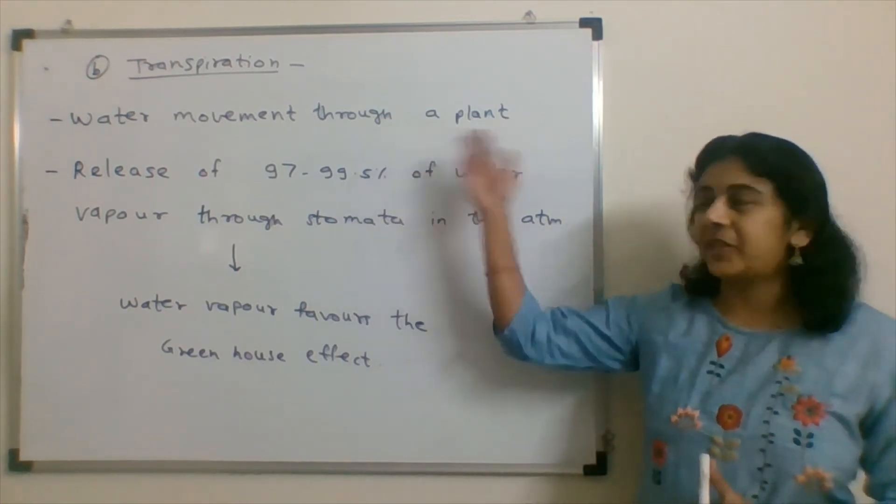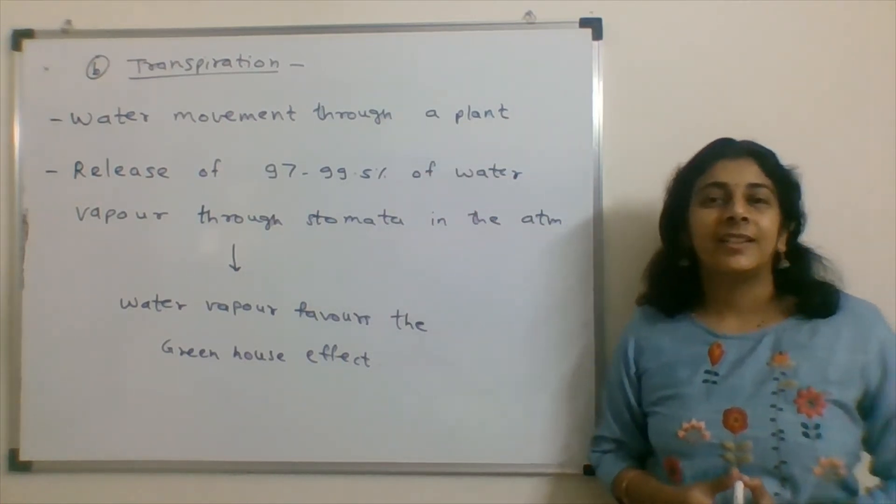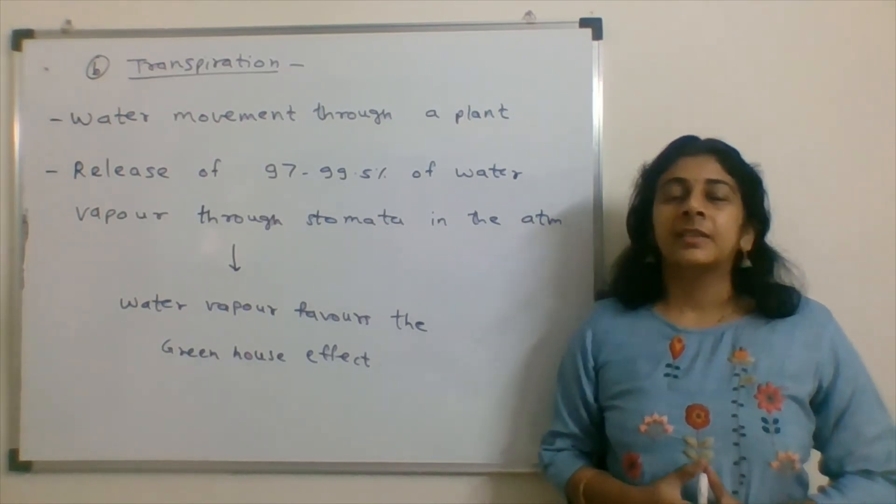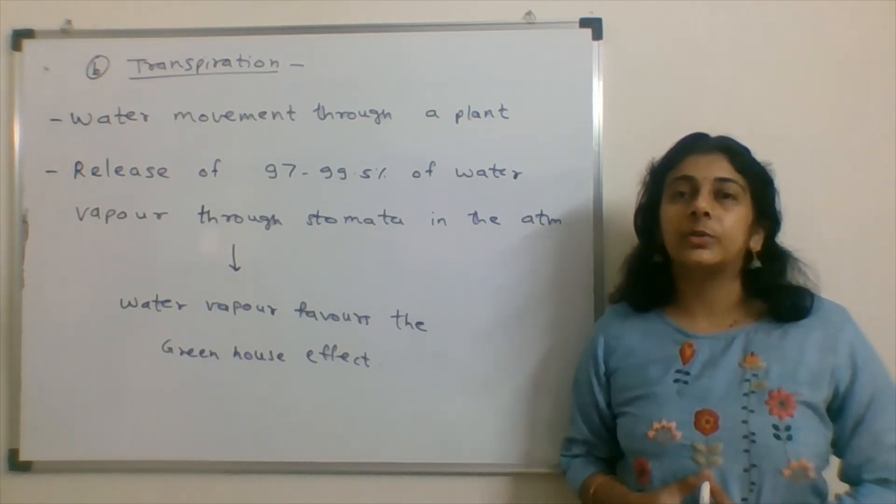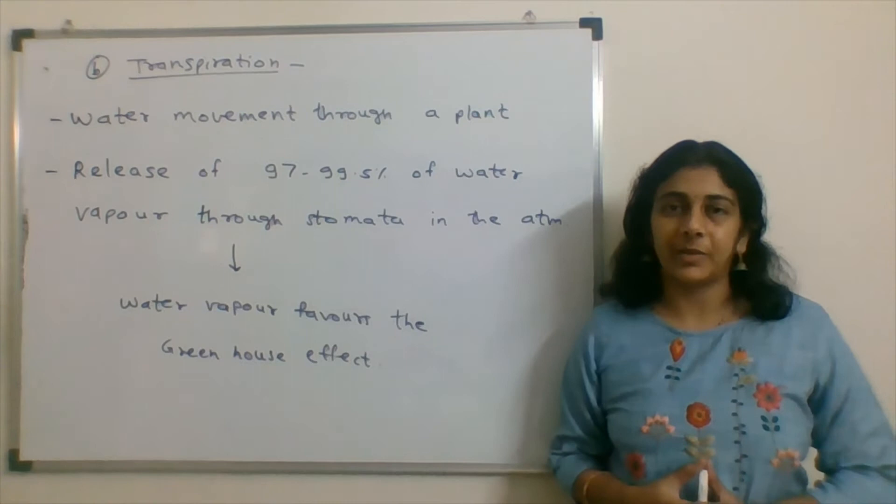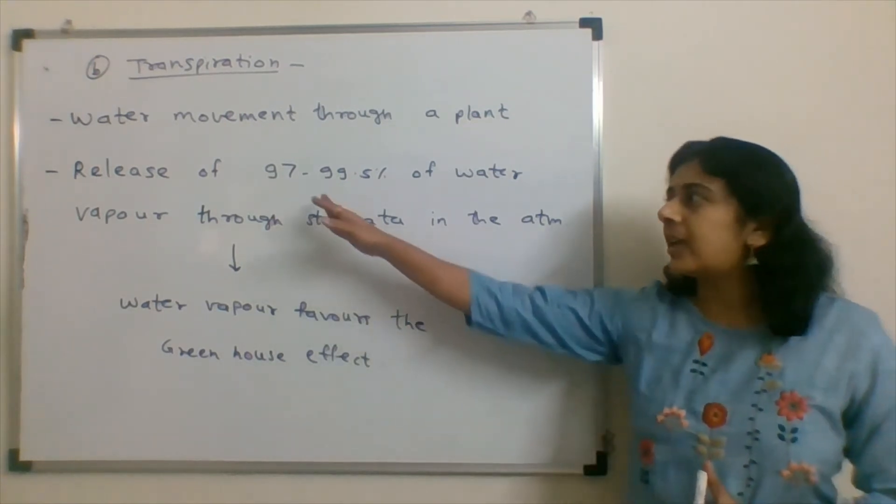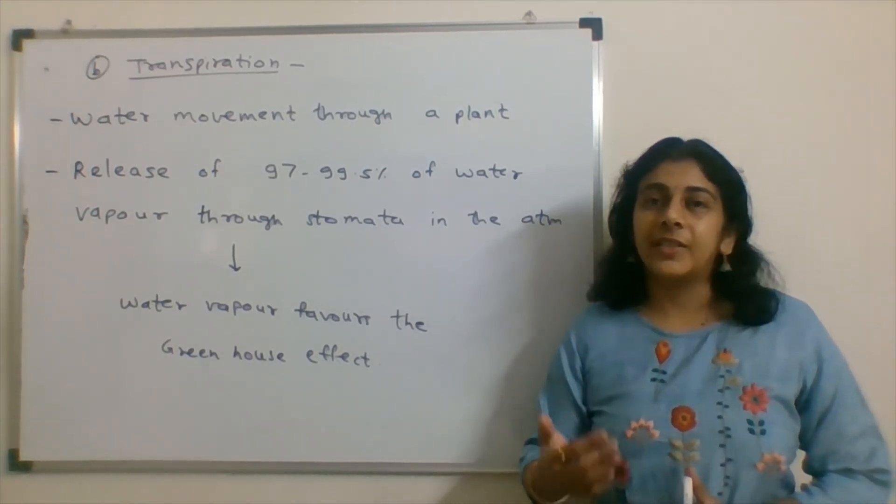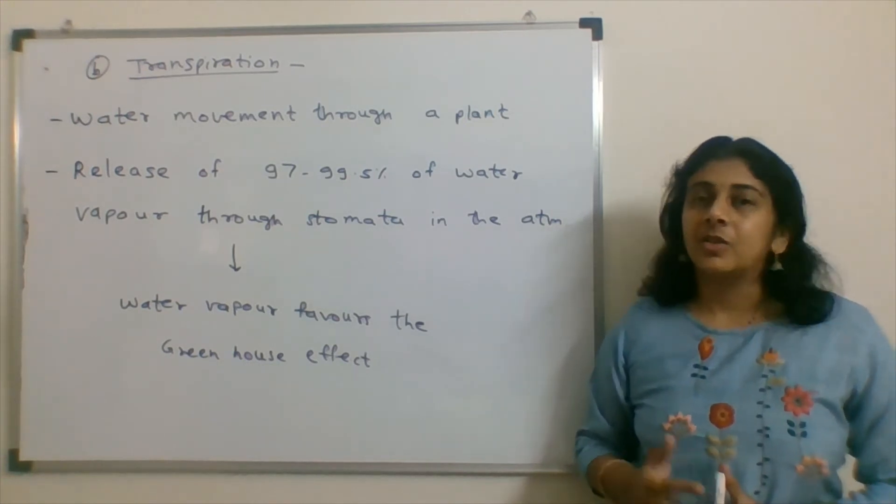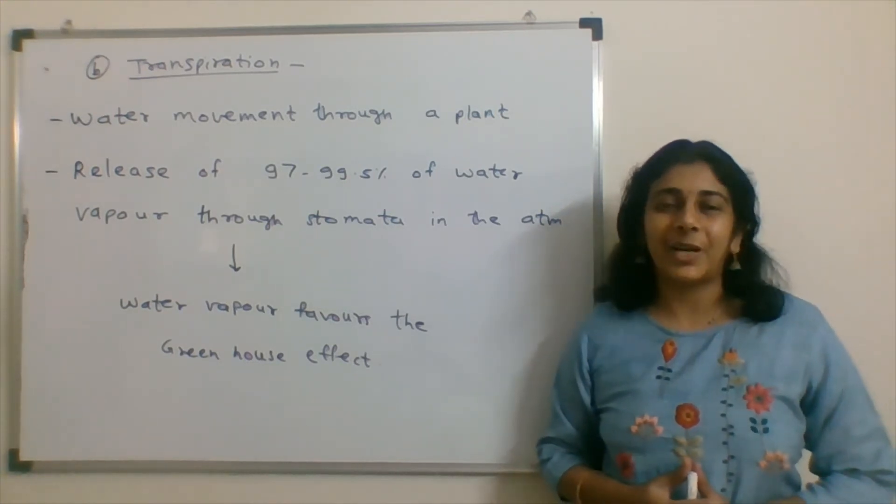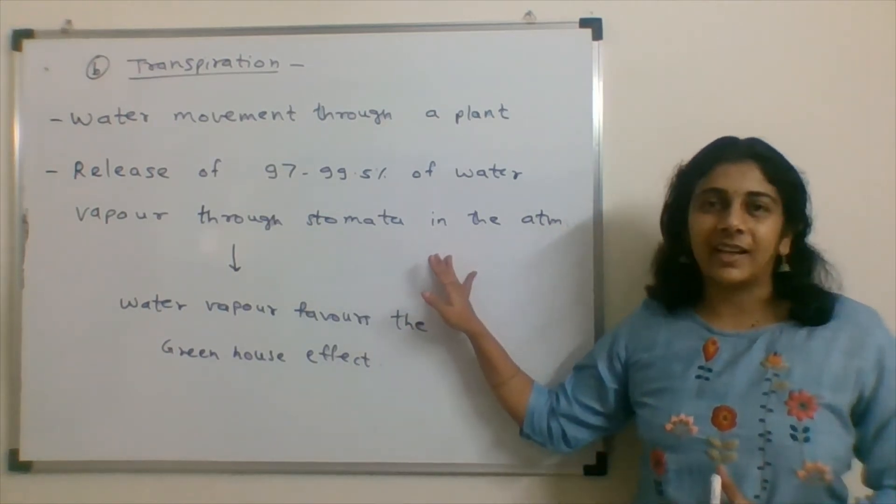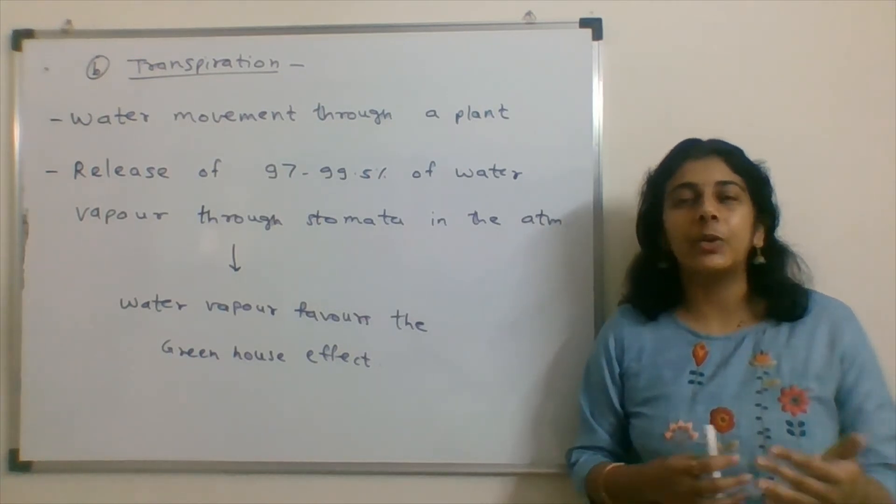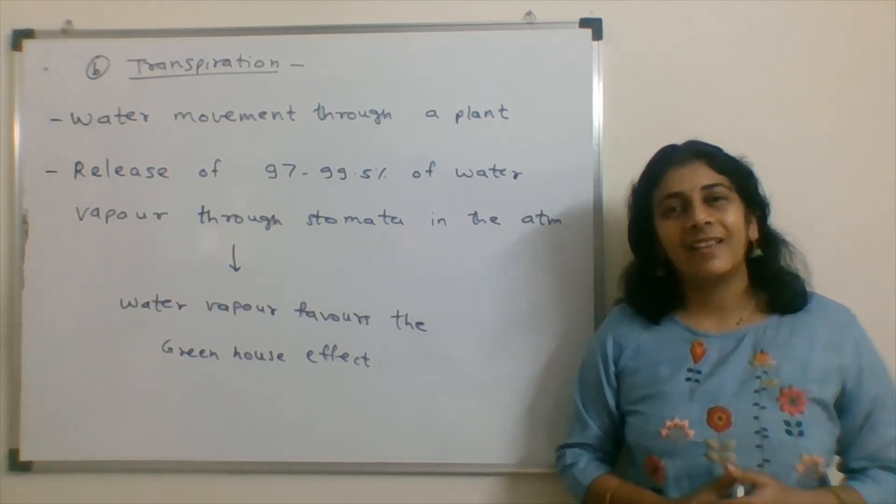Option B is transpiration. That is the movement of water vapor from the plant through the stomata. About 97 to 99.5% of water which is getting absorbed by the plant is released into the atmosphere. Water vapor again is one of the greenhouse gases. Hence, we can say that transpiration favors the greenhouse effect. It doesn't reverse the greenhouse effect.